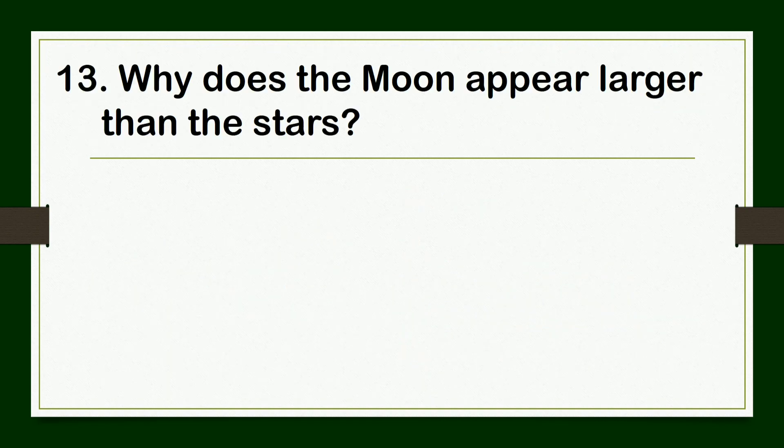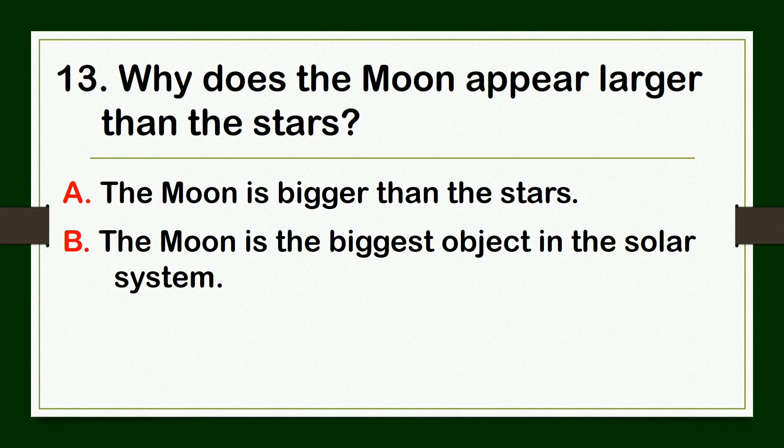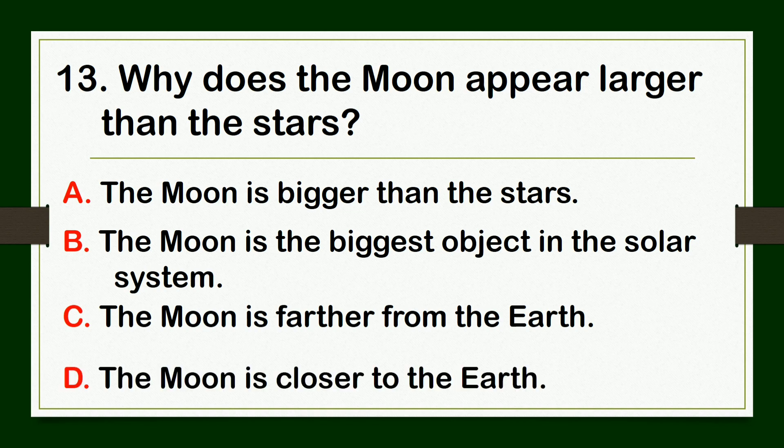Next question: Why does the moon appear larger than the stars? A. The moon is bigger than the stars, B. the moon is the biggest object in the solar system, C. the moon is farther from the Earth, or D. the moon is closer to the Earth.